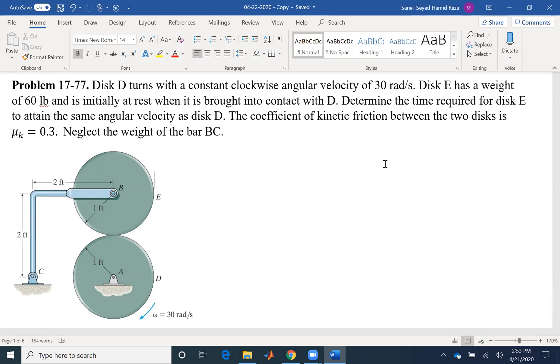Disk E has a weight of 60 pounds and is initially at rest when it is brought into contact with D. Determine the time required for disk E to attain the same angular velocity as disk D.